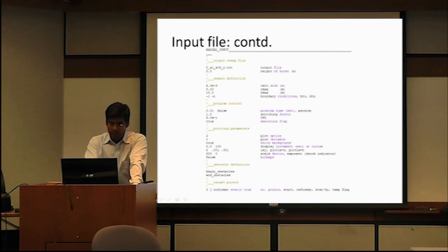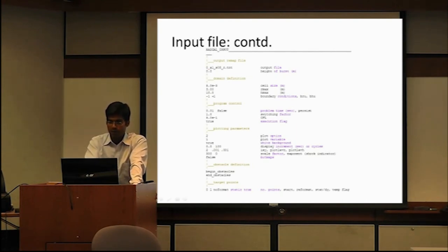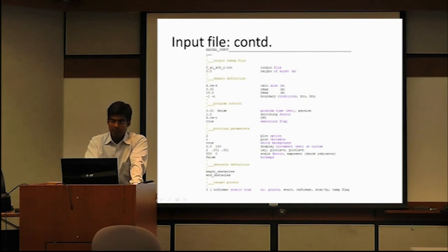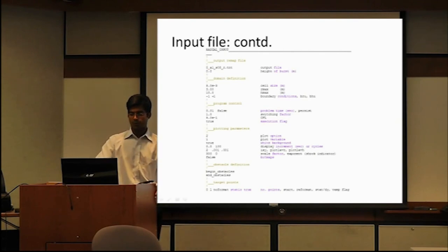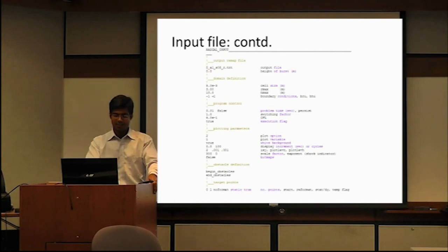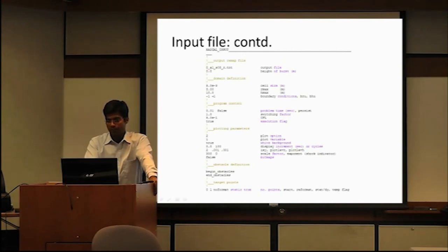For program control in 2D: again define problem time (10 milliseconds), and whether you want the analysis window to close after finishing. The switching factor controls when your analysis switches from 1D to 2D — default value is 1.0, you don't change it. CFL for 1D was 0.75; for 2D analysis use 0.5. These are things you don't normally change.